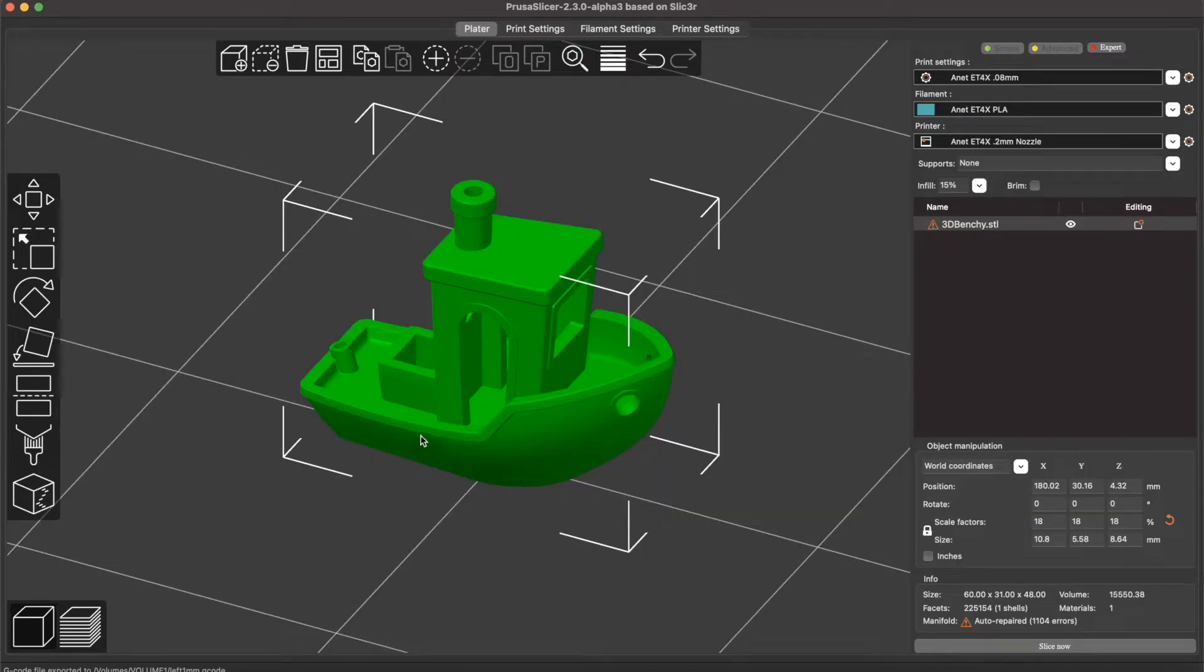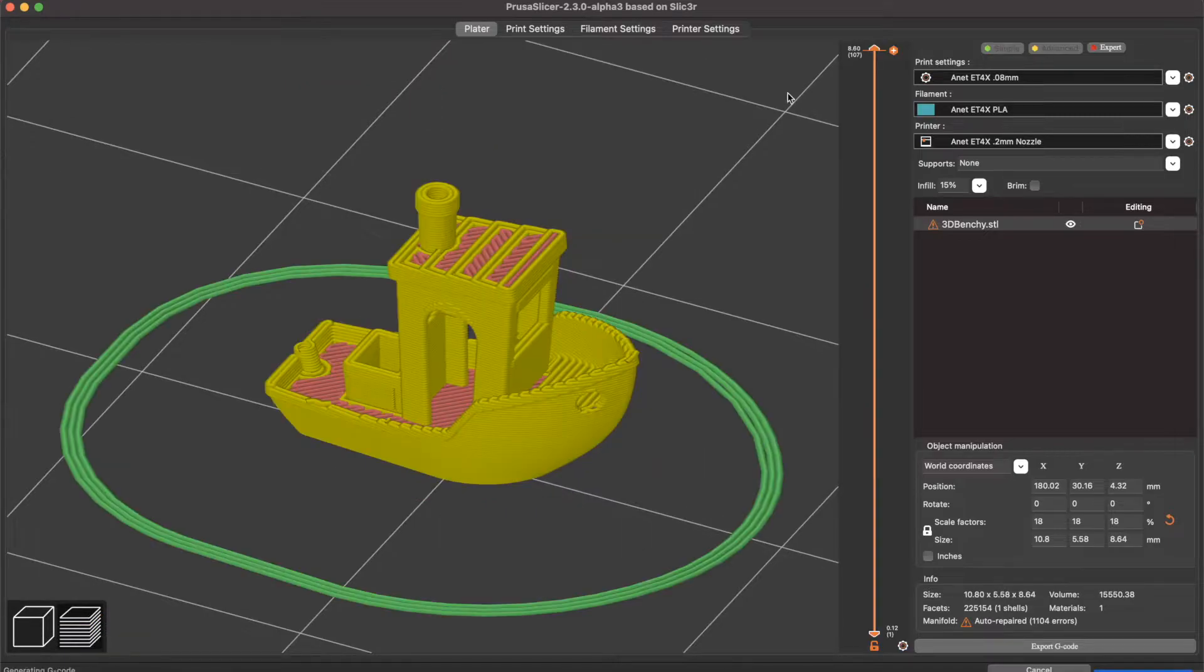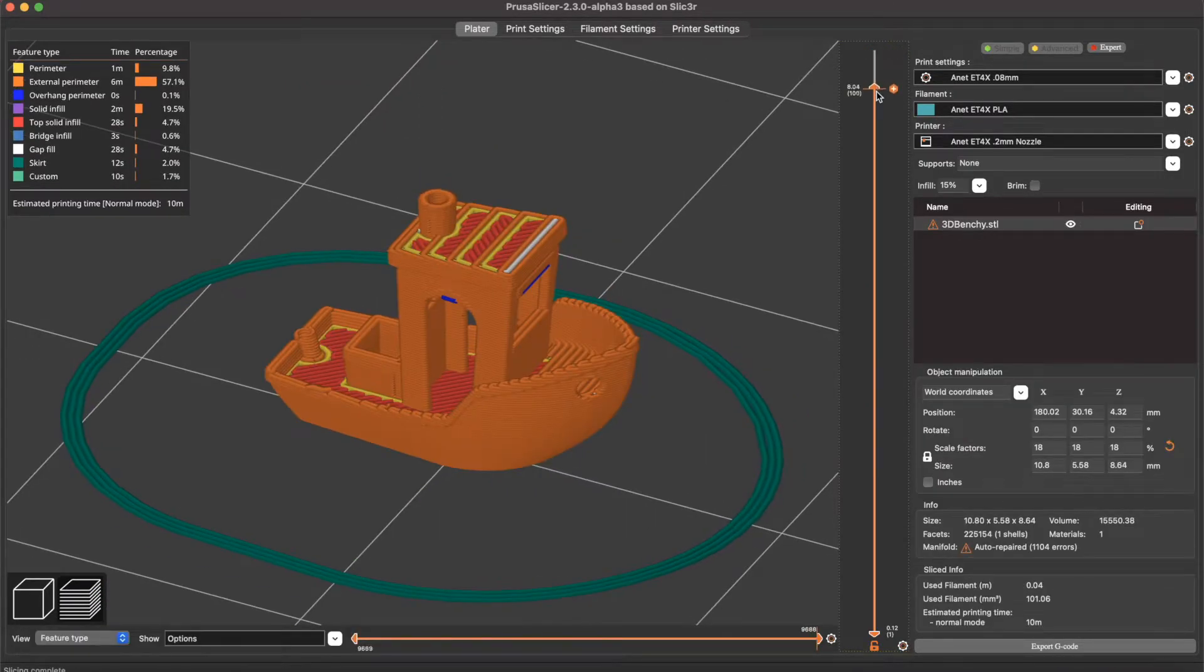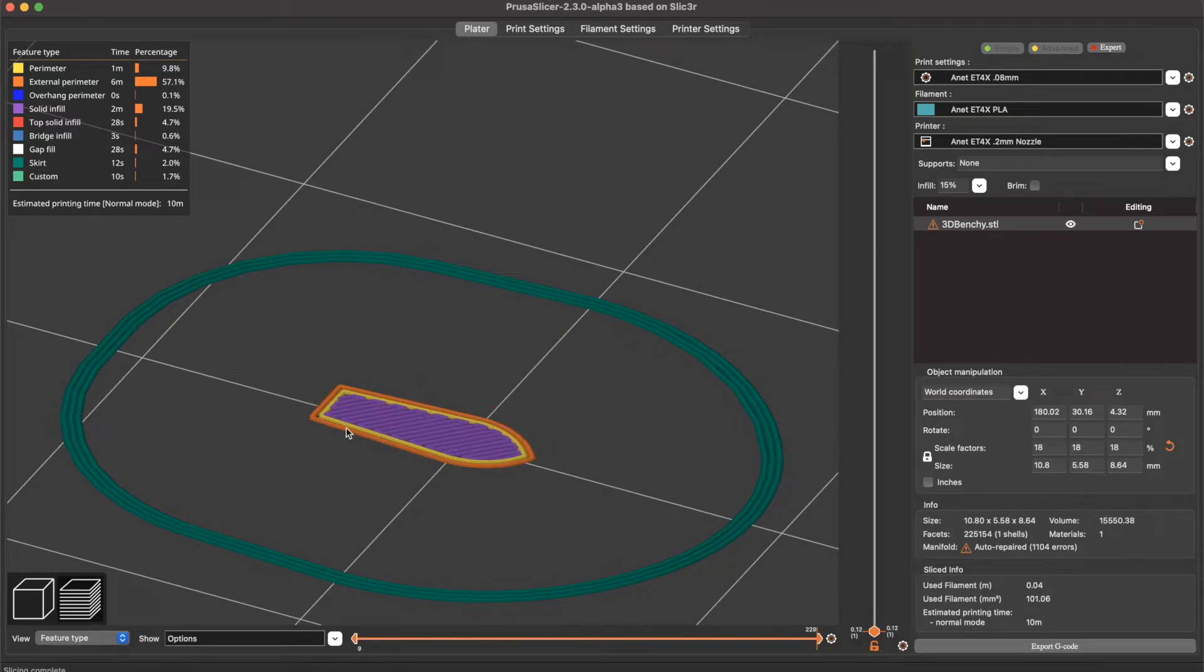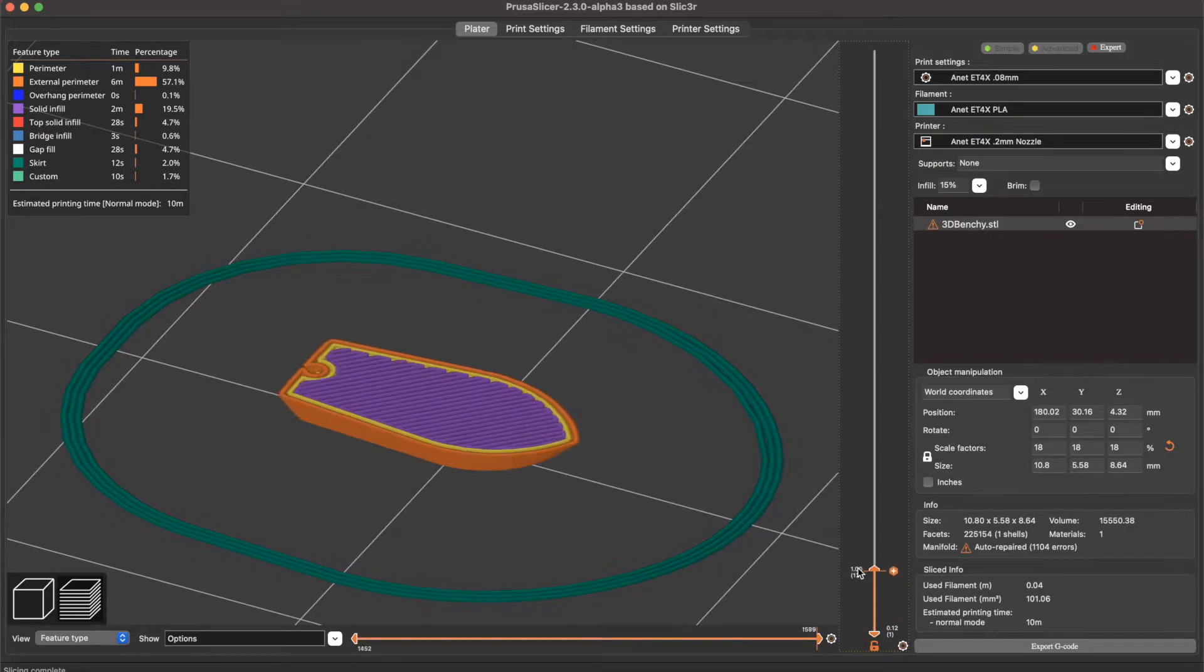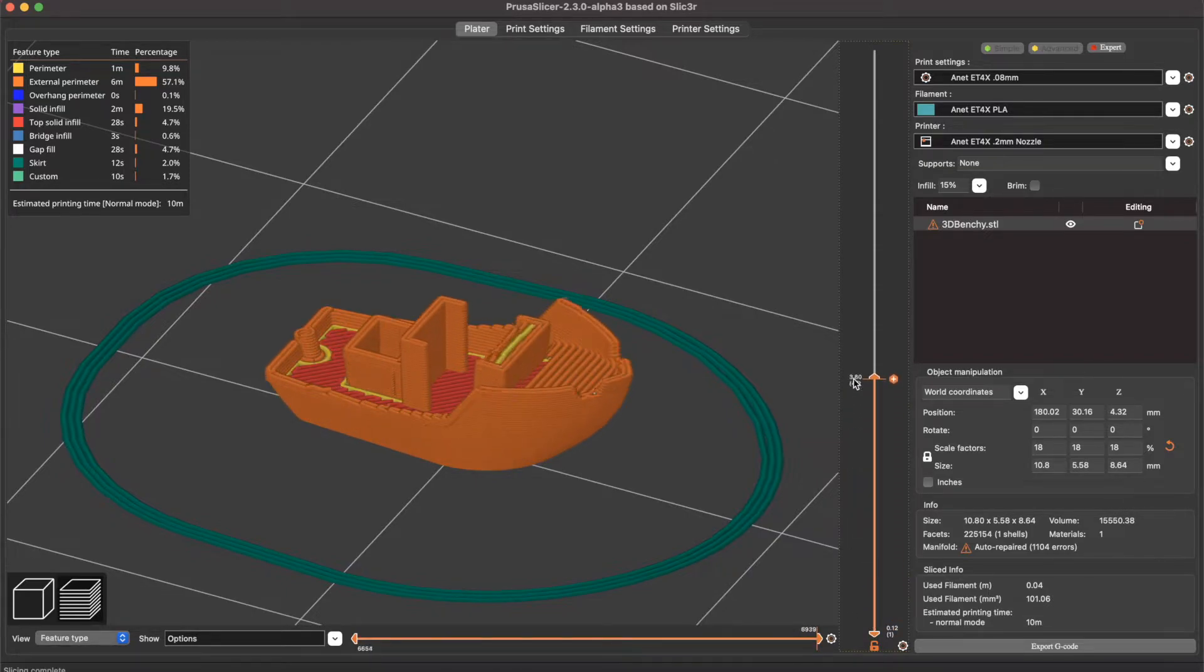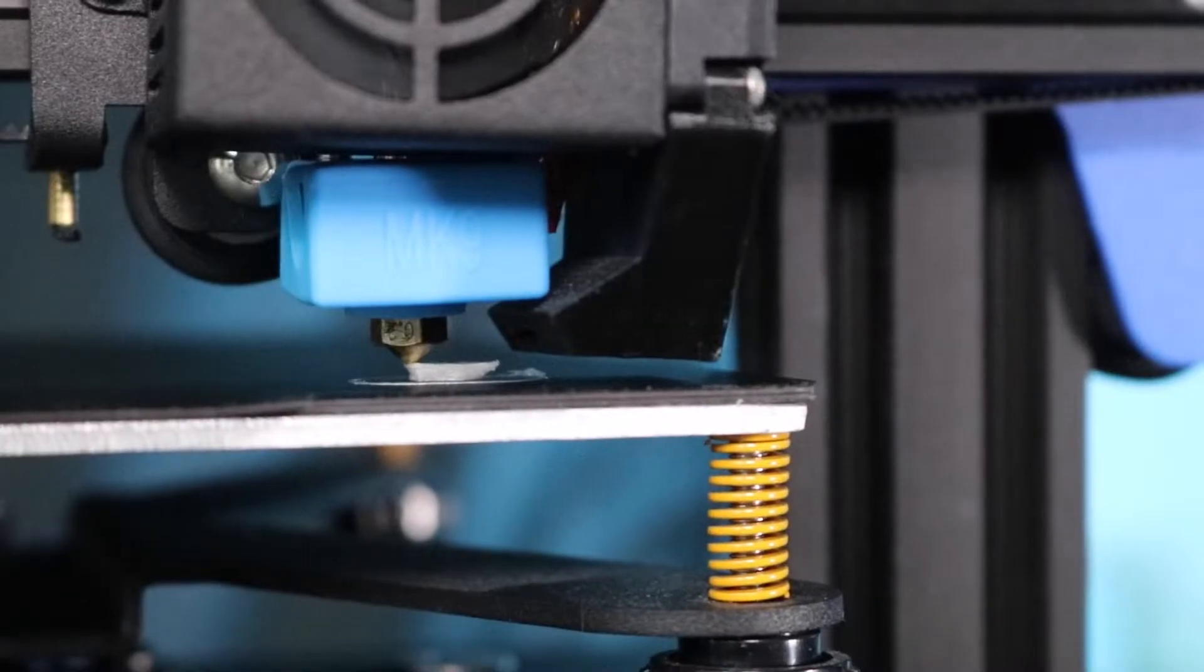Using this profile, I sliced the Benchy at 18% scale, and then went through the toolpath looking for any issues. The Benchy looked good, and some of the smaller features, like the text on the bottom, didn't look like they were going to render, but the overall form of the Benchy seemed to look okay. Once I was satisfied with the toolpath, I exported the G-code and sent it to the printer.